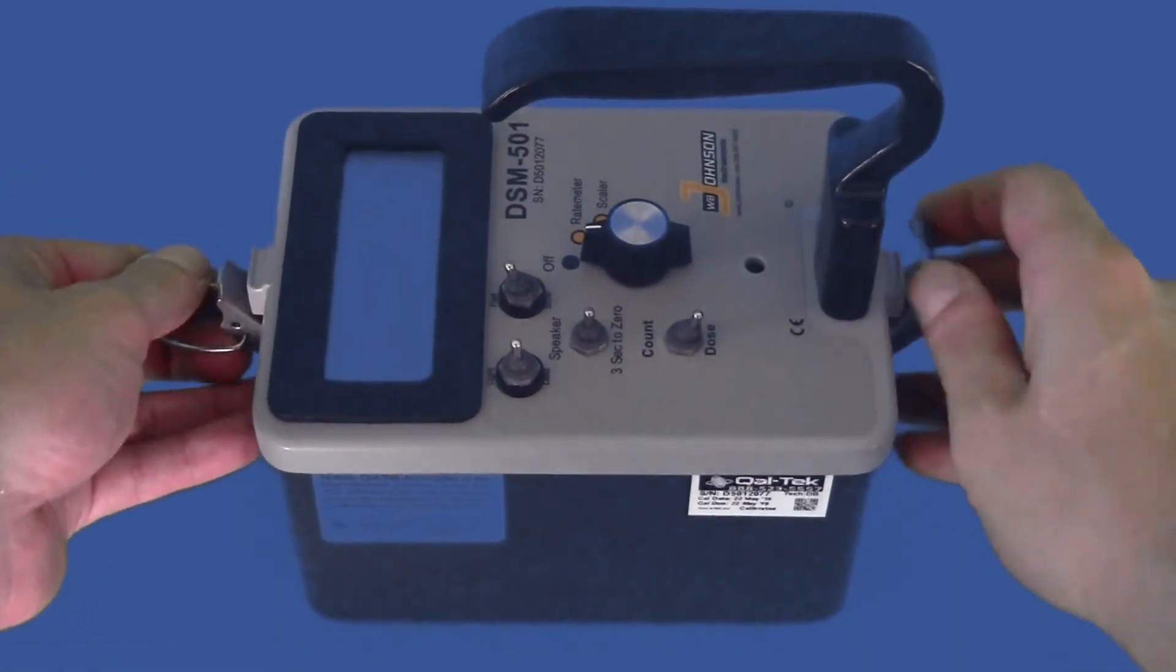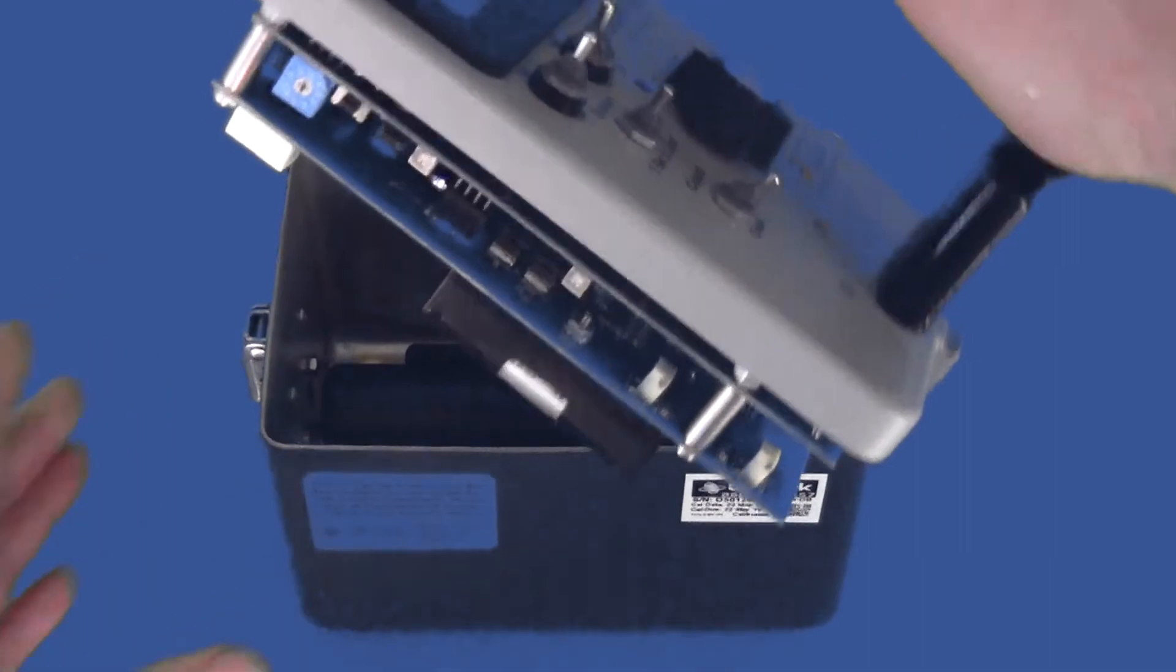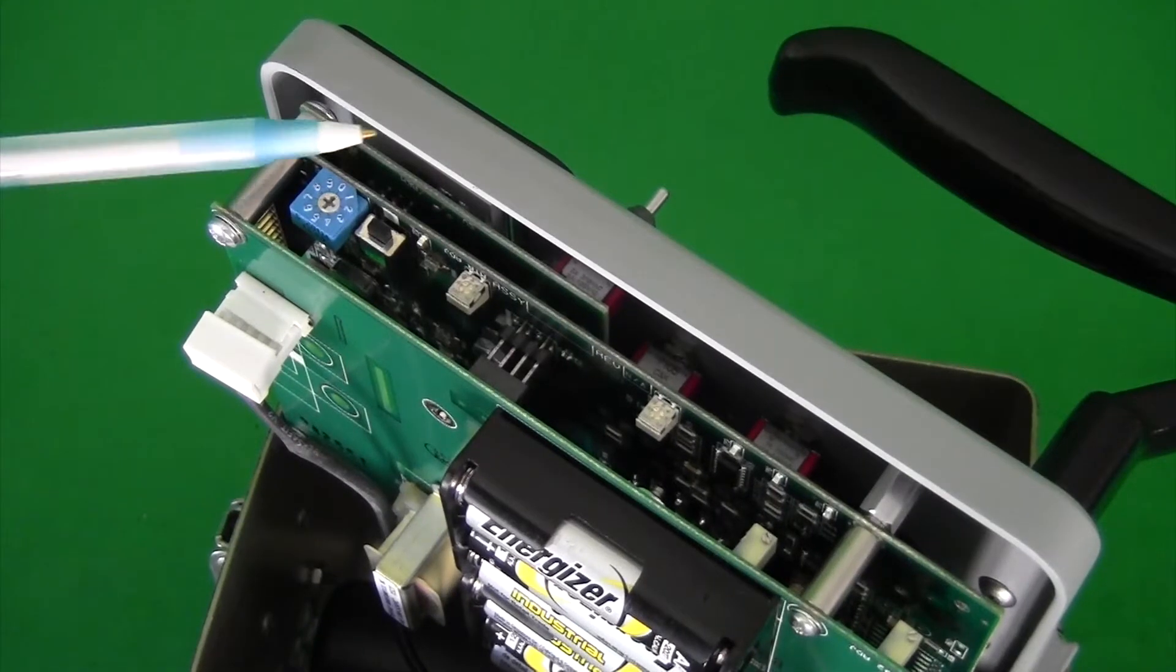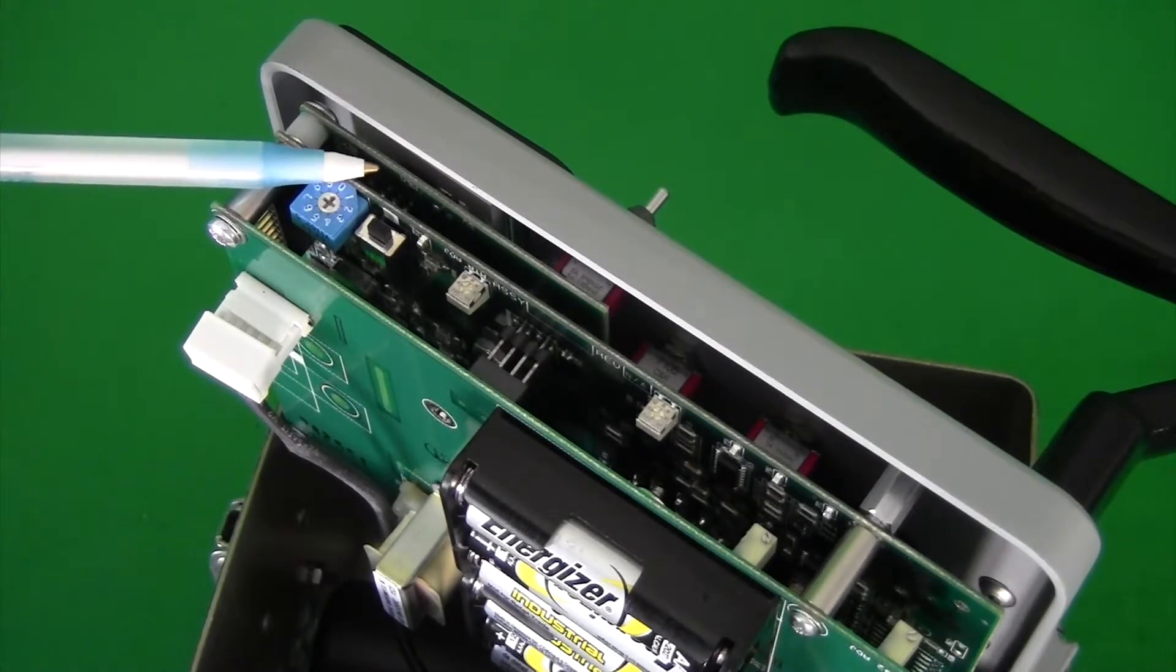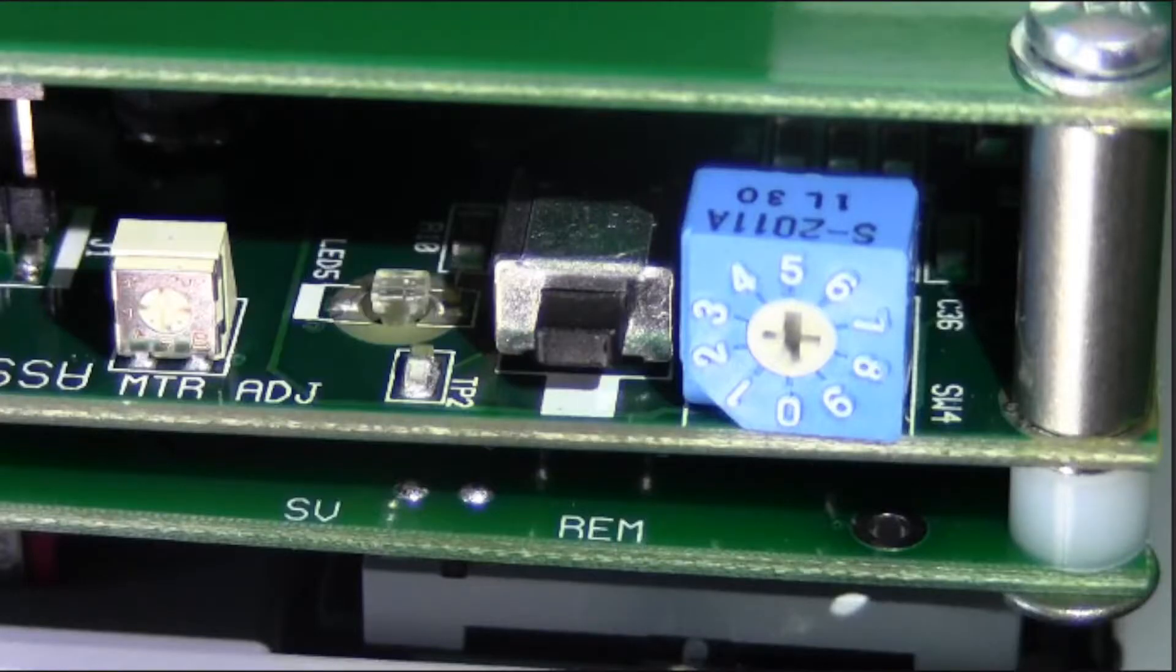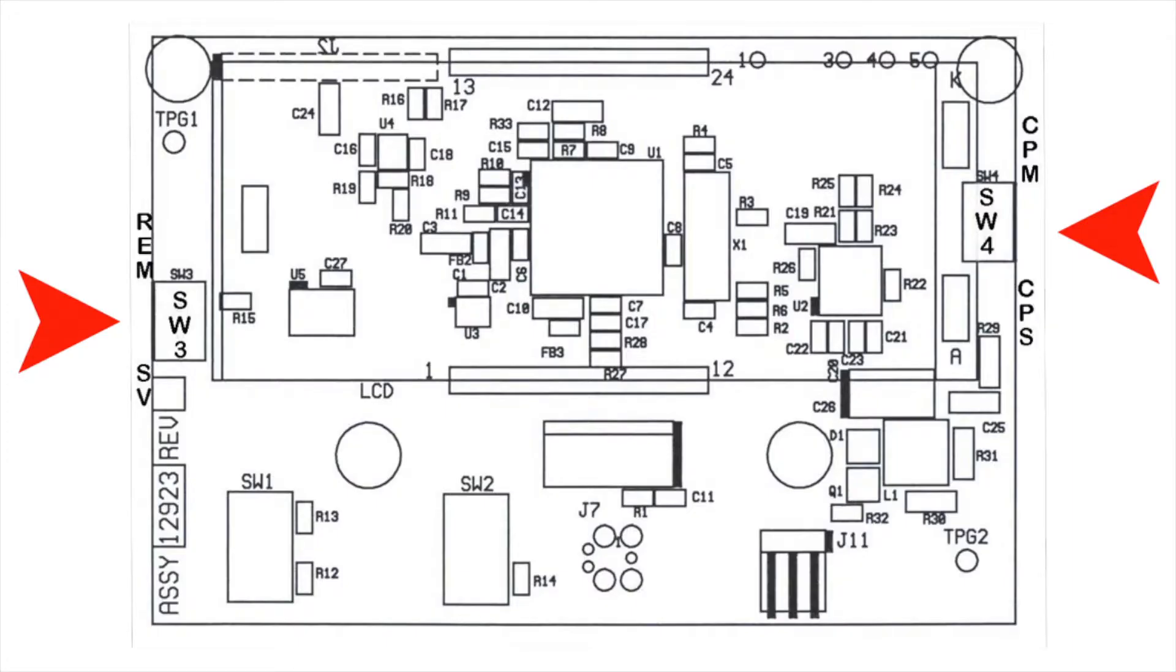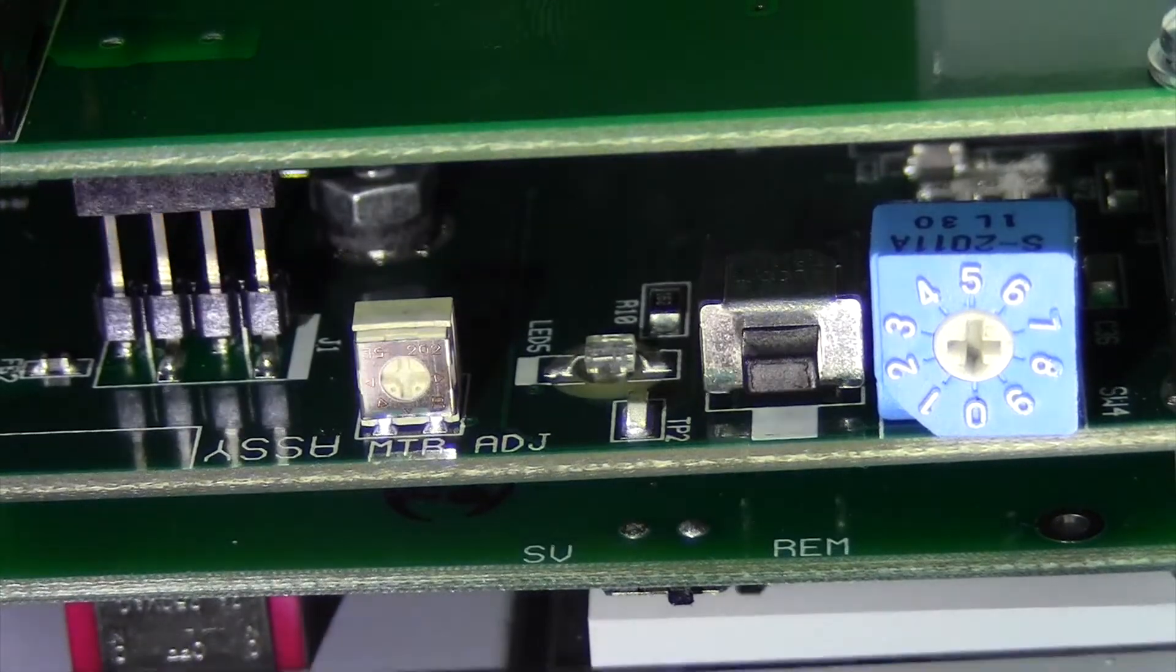The controls used to switch units of dose and counts are located on the LCD PC board. This is the circuit board closest to the display. If you look closely, you can see the markings. Sieverts to R and CPS to CPM. Both switches are clearly marked and located on opposite sides of the board from each other. Now switch units with a small screwdriver.